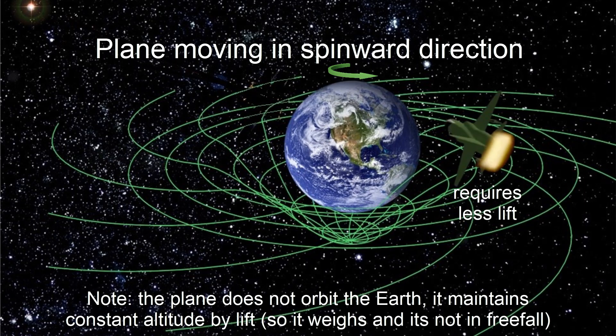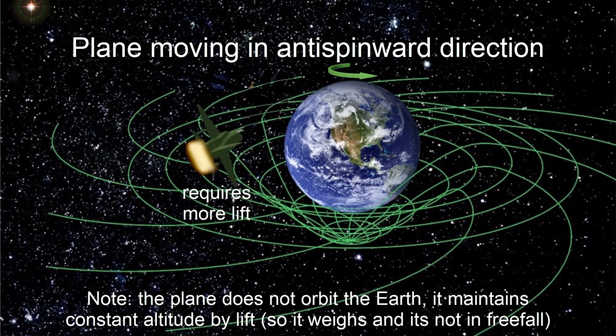and test masses moving through that field experience a velocity-dependent force analogous to the magnetic Lorentz force. Motion with the spin is assisted, while against the spin is resisted. With an anti-spinward motion, the gravitomagnetic force acts downward, adding to that of gravity.